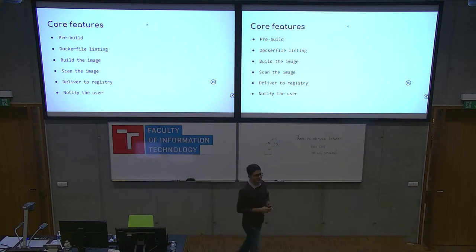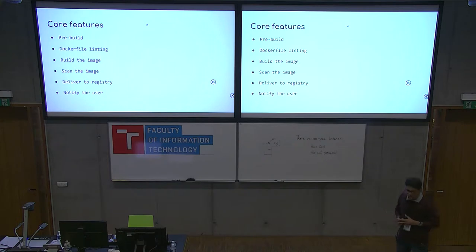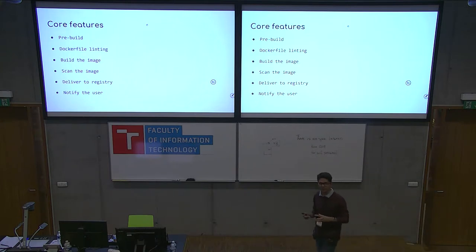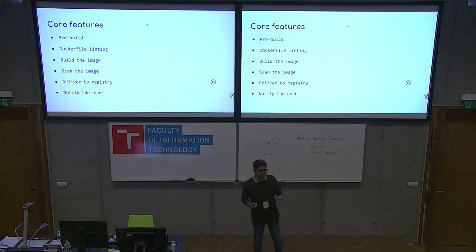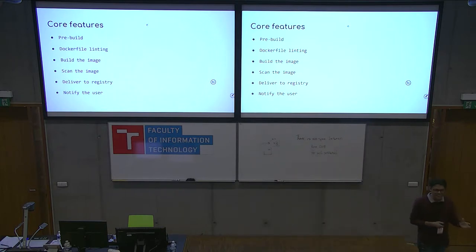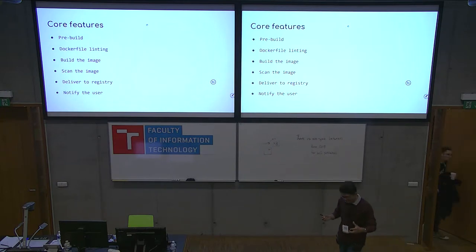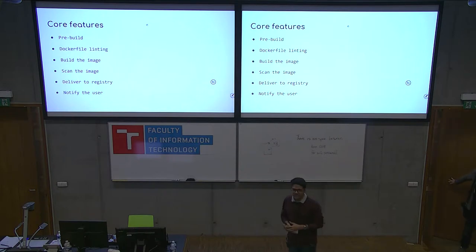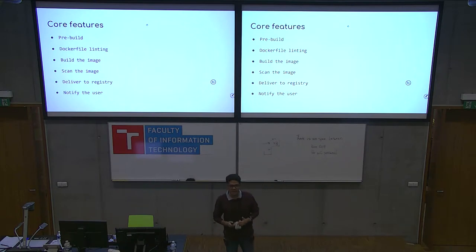You can take a look at all the container images on that URL. The core features of our service include pre-build, which means you can pre-build an artifact or binary before you build the container image. Next is Dockerfile linting. We use Dockerfile — that's the canonical way of making container images right now — and we do the Dockerfile linting using the Dockerfile lint project from Project Atomic.